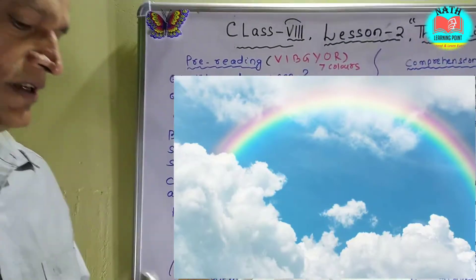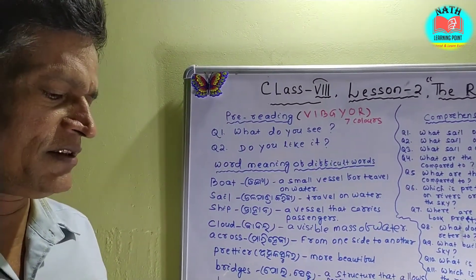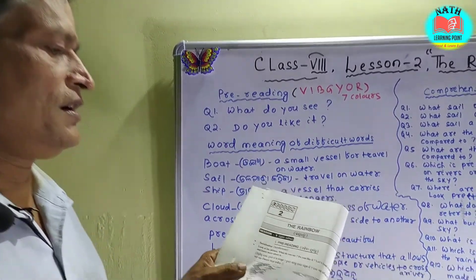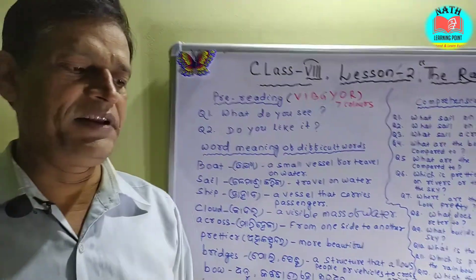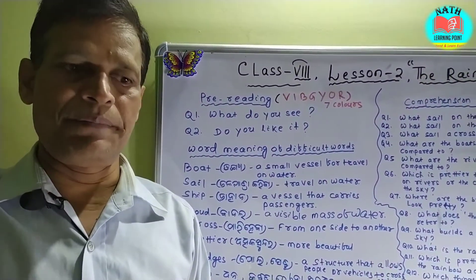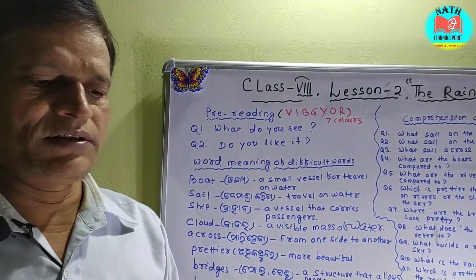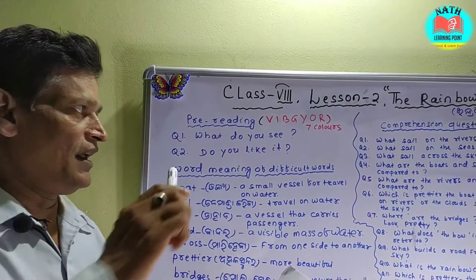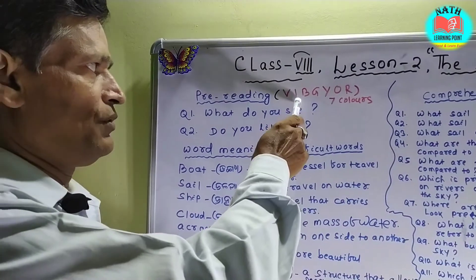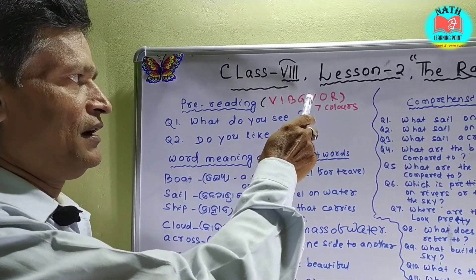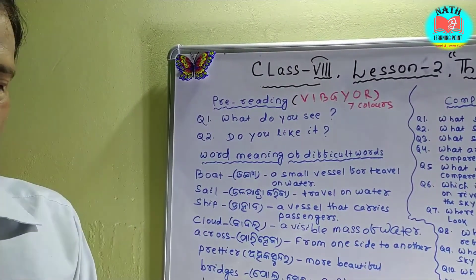First of all, I ask you some pre-reading questions. Look at the picture. What do you see? This is the picture of a rainbow. It is a curved blend of different colors that appears in the sky when the sun shines through rain. The rainbow has seven colors: violet, indigo, blue, green, yellow, orange, and red.